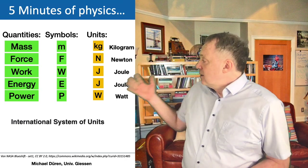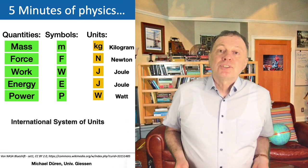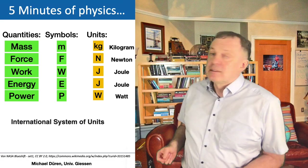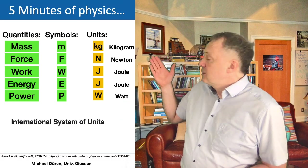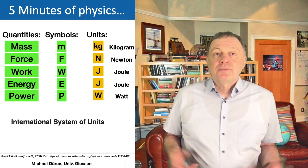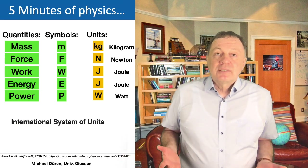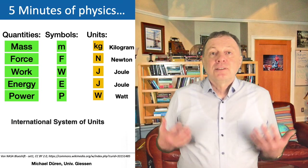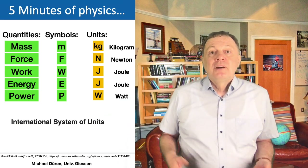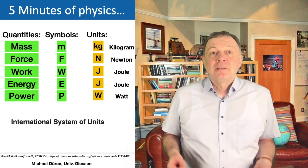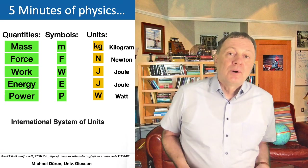In physics we use symbols as the language of physics is mathematics. We have the symbols M, F, W, E, and P for mass, force, work, energy, and power. All these quantities have units so that you know how to measure them: mass is measured in kilograms, force in Newtons, work in joules, energy as well, and power is measured in watts.